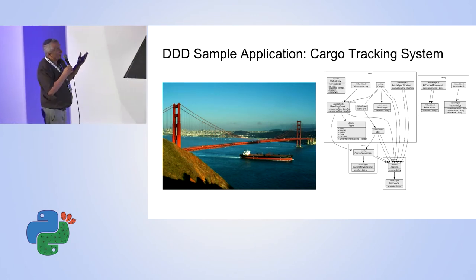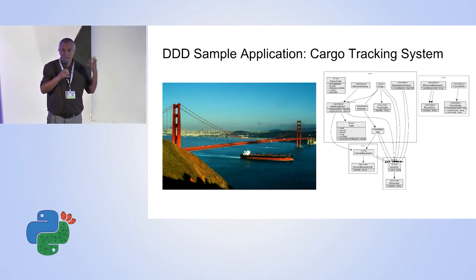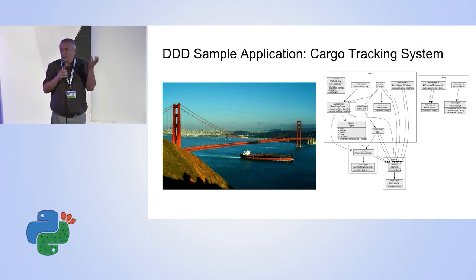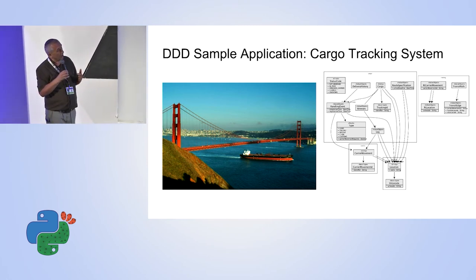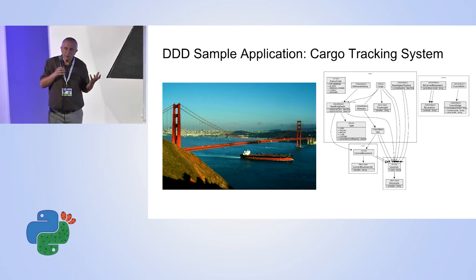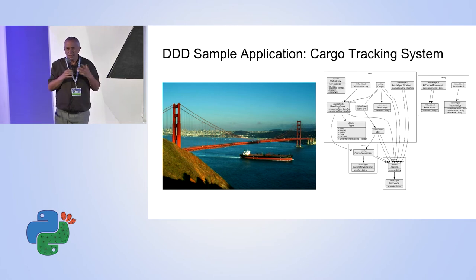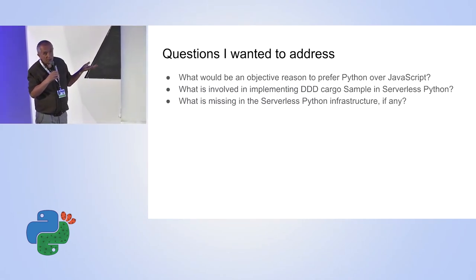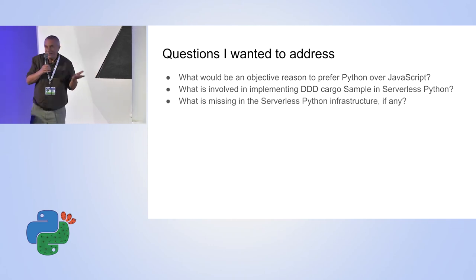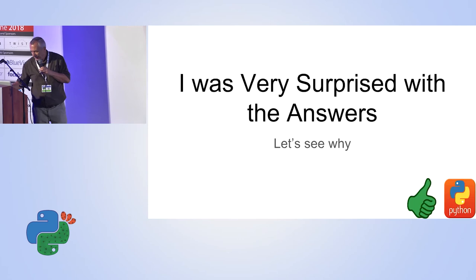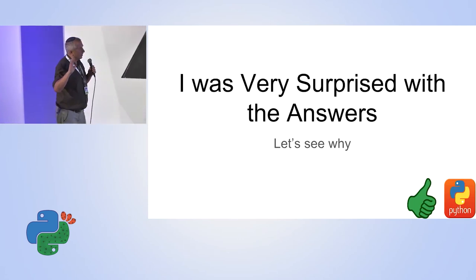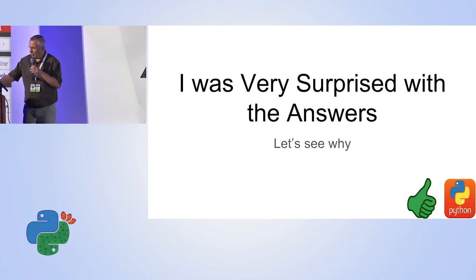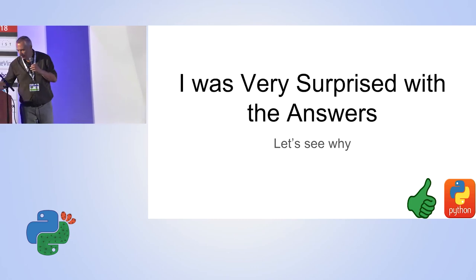I picked the cargo tracking system as a sample example. The domain-driven design community used this application to demonstrate DDD principles — first developed around 2009 in Java. DDD normally flourishes when domains are complex, with many objects, many connections, and complex business rules. The questions I wanted to address: what is involved here, and what is missing in Python infrastructure, if anything? I was very surprised with the results — I did not expect what I found at all.